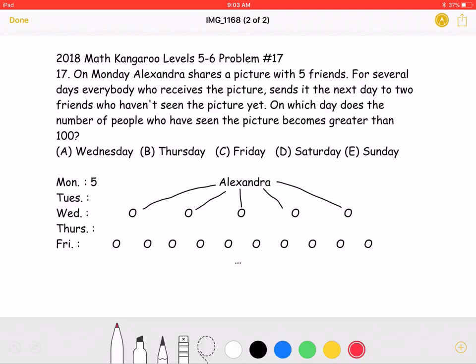To start, the problem says that on Monday, Alexandra shares the picture with five friends. So over here, I've written Monday, five people have seen it.